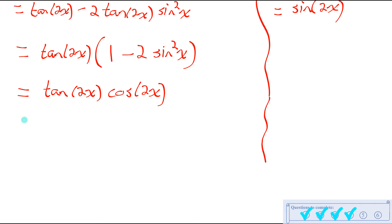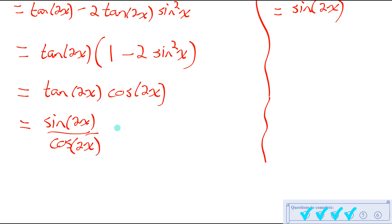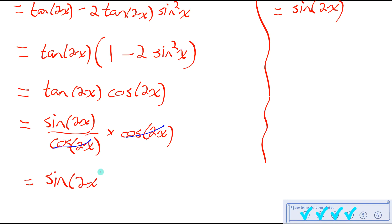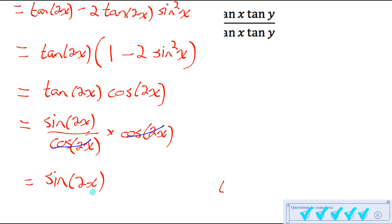Using the quotient identity, tan of 2x equals sine of 2x over cos of 2x. And that's being multiplied by cos of 2x. So I have a factor of cos of 2x being divided by cos of 2x — those cancel because something divided by itself is 1. All I'm left with is sine of 2x, which is exactly what I have on the right side. So this equation is an identity — left side equals right side.